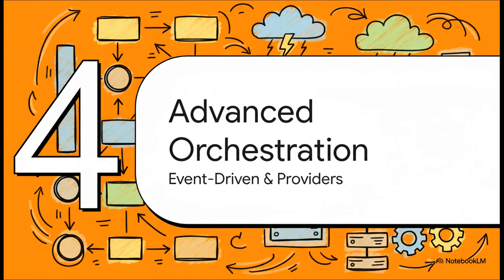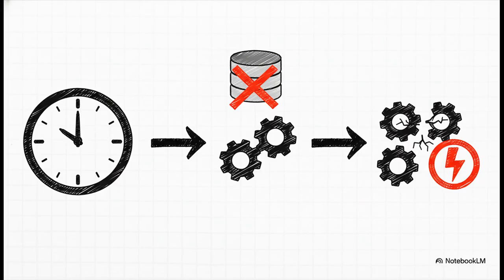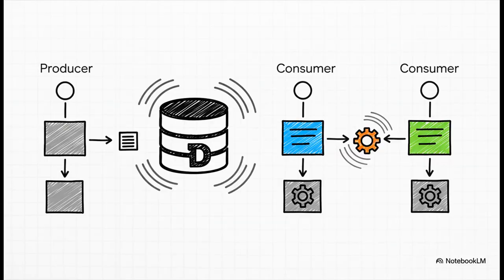Once you've got the basics down, Airflow opens up some seriously powerful patterns for orchestration, and one of the coolest is making your workflows event-driven. The old approach was always time-based — run this job every day at 9am. But the problem is the job runs whether the data it needs is actually there or not, leading to wasted compute and failed runs. The smarter modern approach is to use a feature called Datasets. A producer DAG, when it finishes, announces that it's updated a dataset, and any consumer DAGs listening for that specific dataset will automatically kick off and run. Your workflows run exactly when they should.